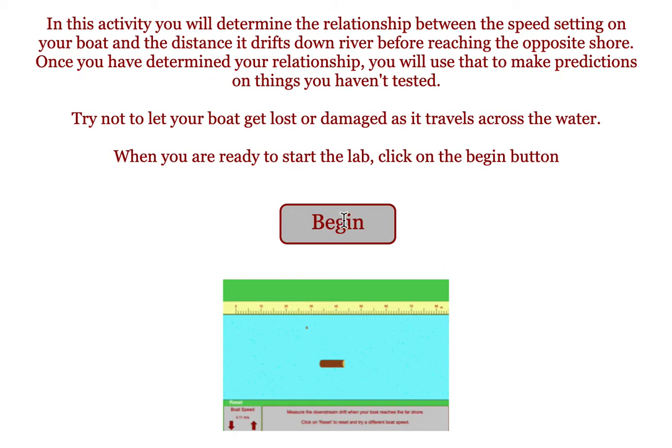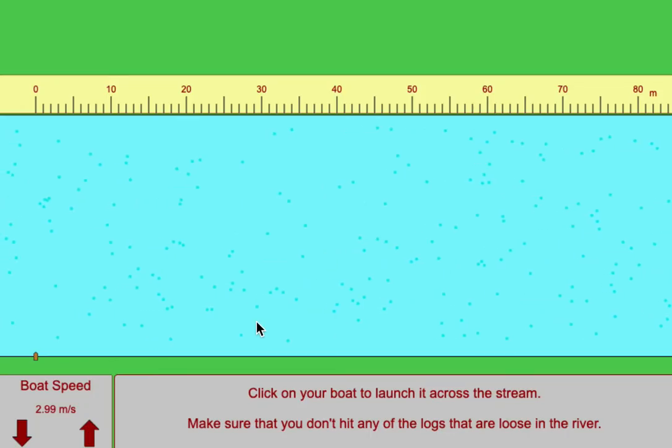The purpose of this activity is to see the relationship between the speed setting on a boat and the amount the boat will drift downstream because of the current in the stream. When you open up your window, you will get a moving stream.